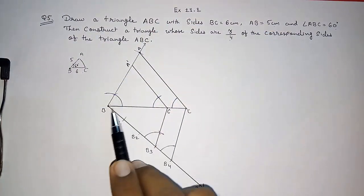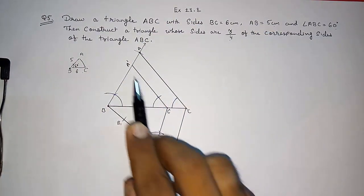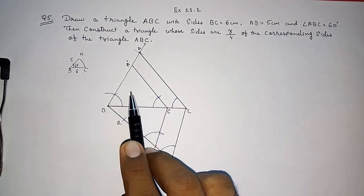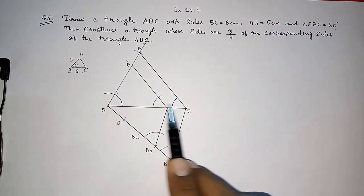Now this point will be A dash. So now your A dash B C dash is the required triangle. This triangle is 3 by 4 of this triangle ABC.